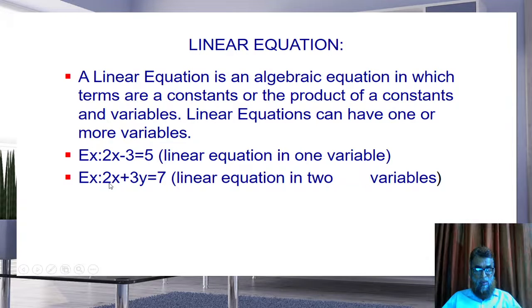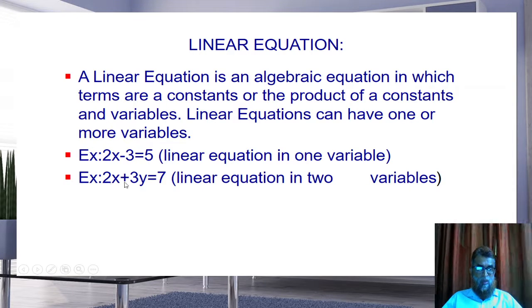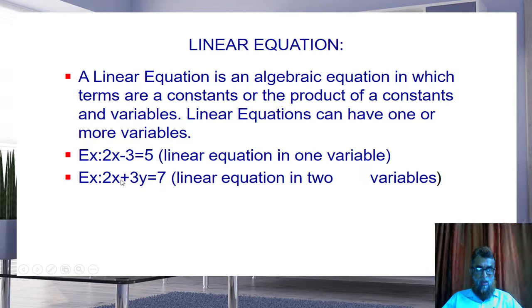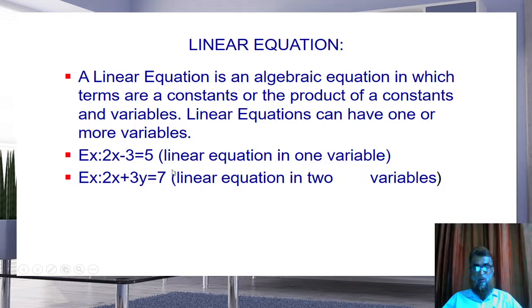Another example with two variables: 2x plus 3y is equal to 7. Here, 2, 3, and 7 are constants, and we have two variables, x and y.